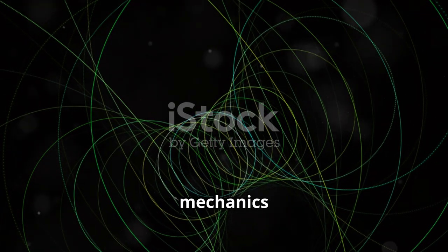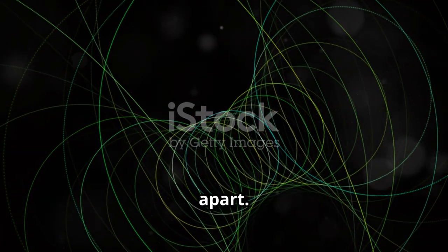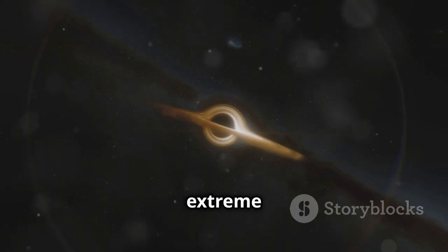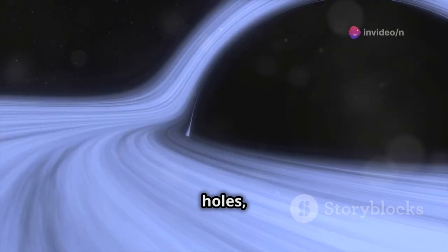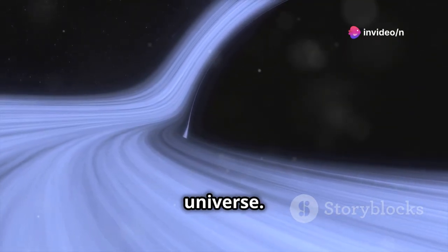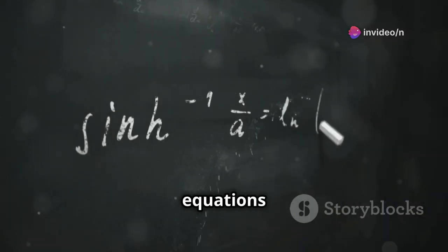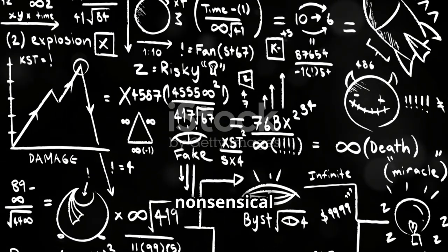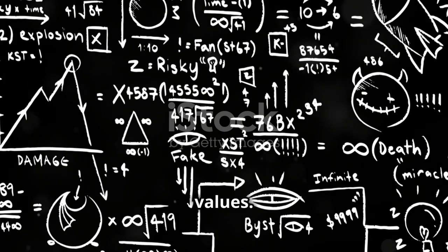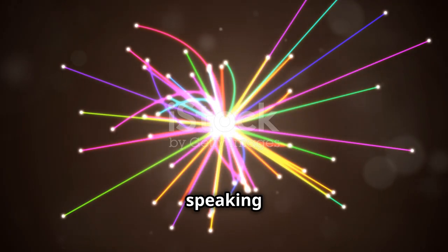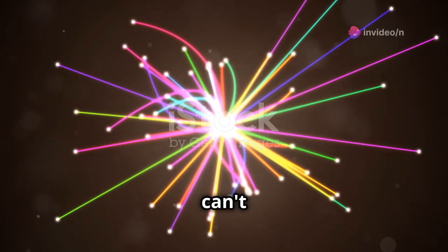When we try to apply quantum mechanics to gravity, things fall apart. The conflict becomes apparent in extreme conditions. Inside black holes, for instance, or at the birth of the universe. In these scenarios, we need both theories. But our equations break down. They give nonsensical answers, like infinite values. It's as if the universe is speaking two different languages, and we can't find a translator.